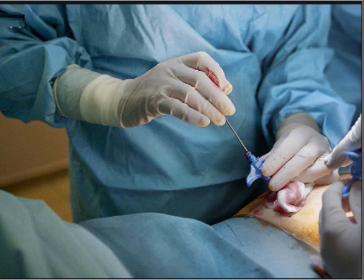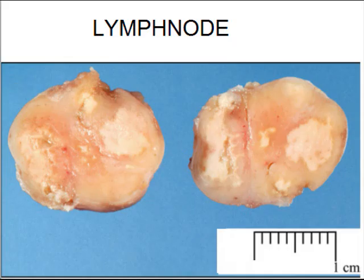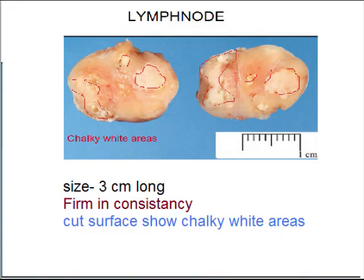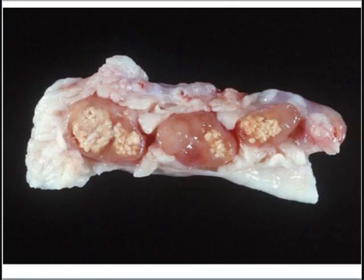The patient's cervical lymph node was biopsied and sent for histopathological examination. Here is the excised lymph node — you can appreciate it is enlarged in size. The cut surface shows chalky white areas, which represent caseous necrosis, because in caseous necrotic tissue there is deposition of calcium salts. The gross description: lymph node is 3 cm long, firm in consistency, with chalky white areas on the cut surface.